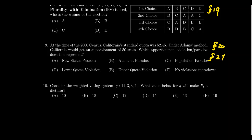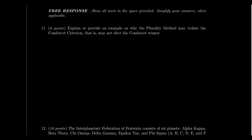That brings us to the end of the multiple choice section. Now let's move to the free response section with 5 questions — most worth 10 points, but Question 11 is worth 8 points. It's a potpourri-type problem with many possible versions. One version is a question about fairness of elections — like Lesson 20 content — but you could also get fairness questions regarding apportionment or weighted voting.